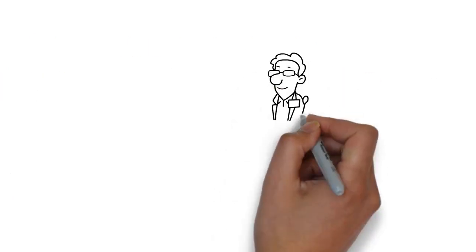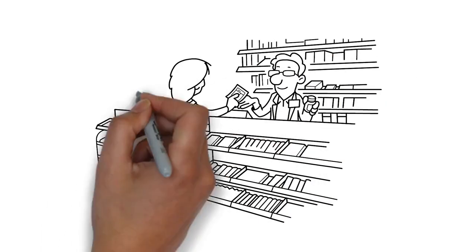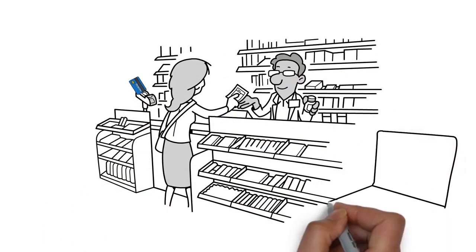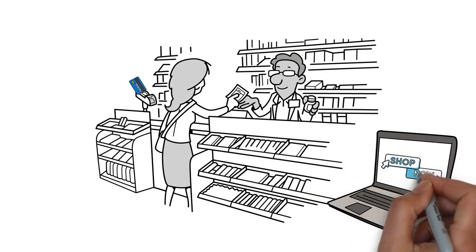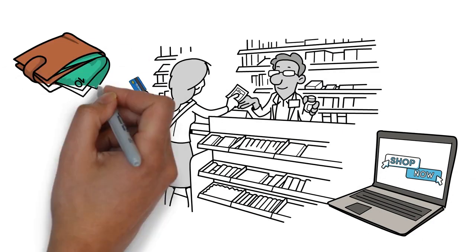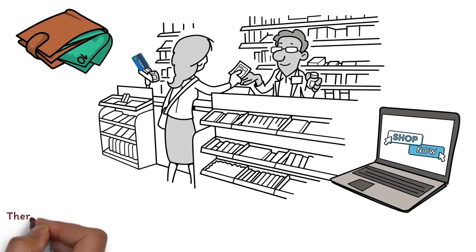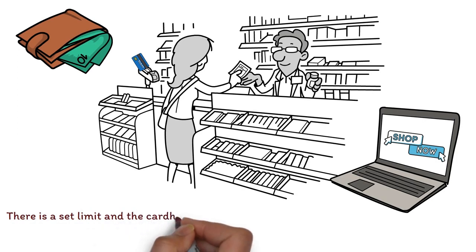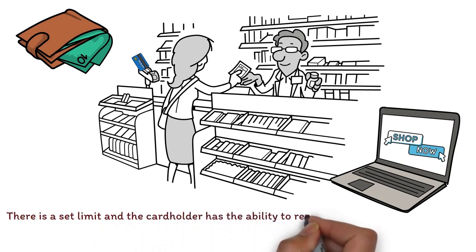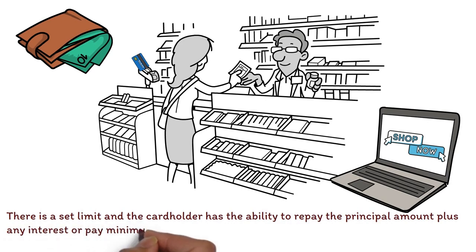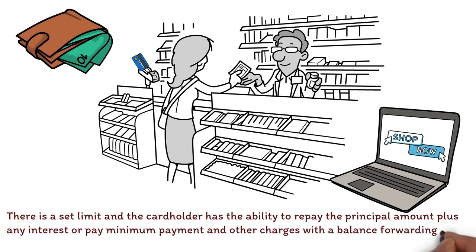Credit cards can be used to pay for goods and services at merchants and online stores, as well as to purchase cash advances. Usually, there is a set limit and the card holder has the ability to repay the principal amount plus any interest or pay minimum payment and other charges with a balance forwarding option into the next billing cycle as stated in their credit card terms.